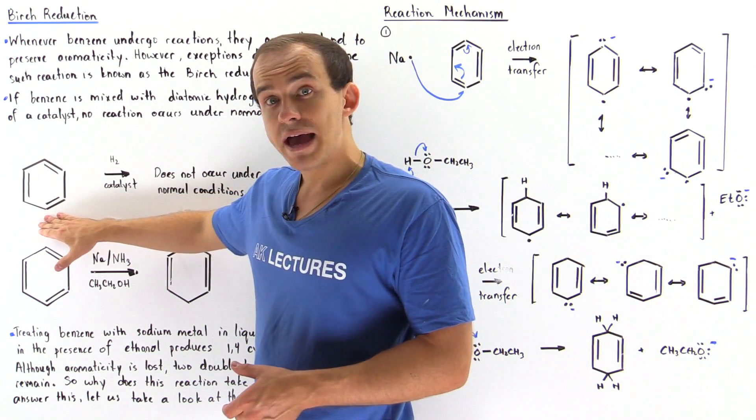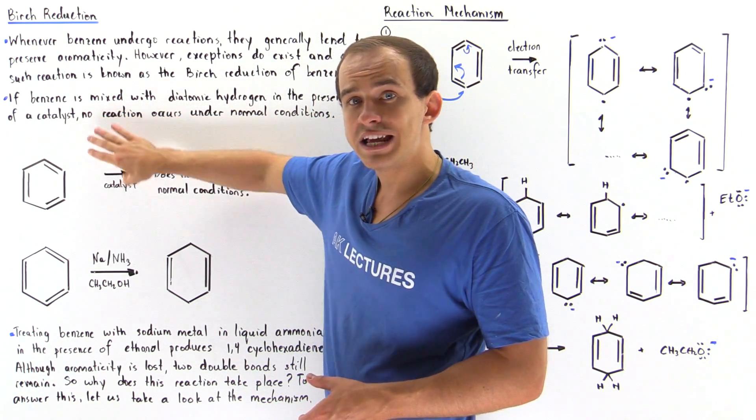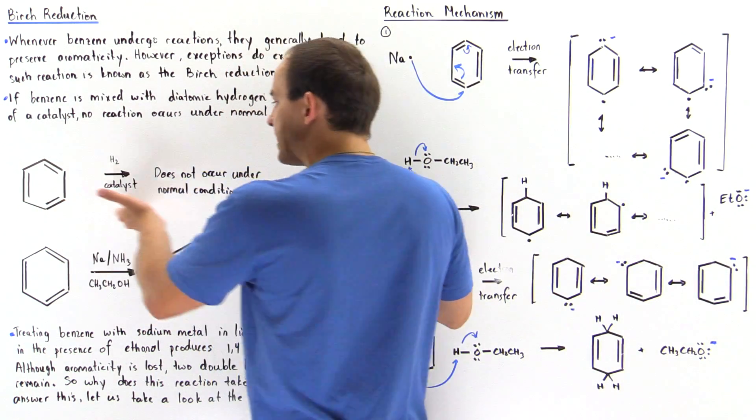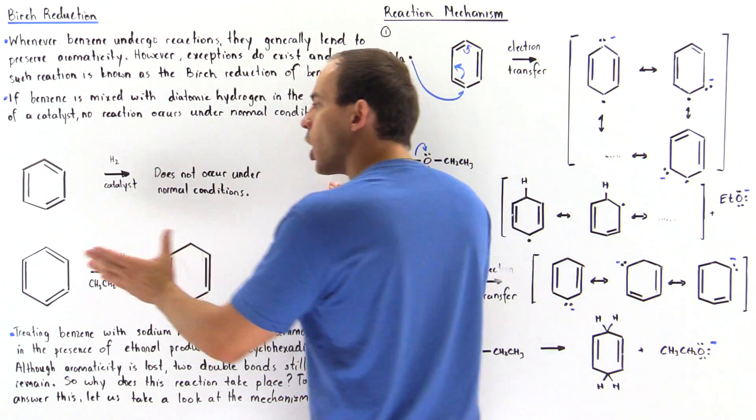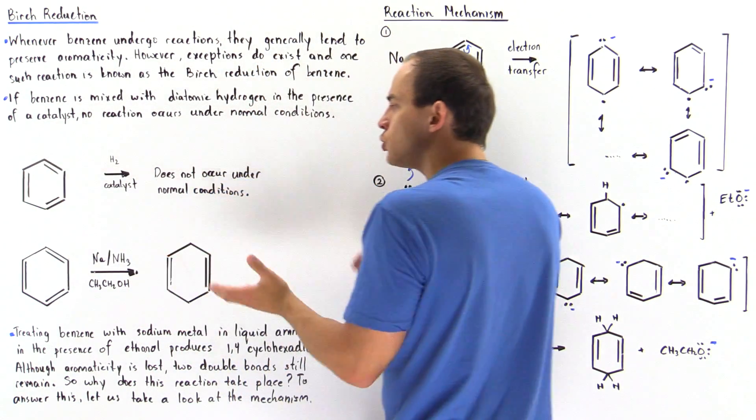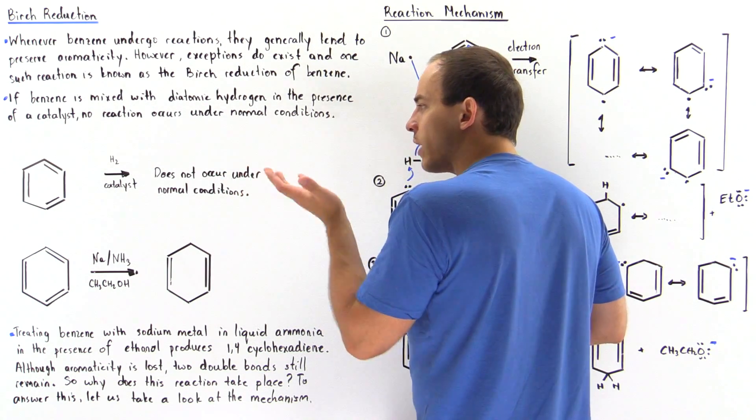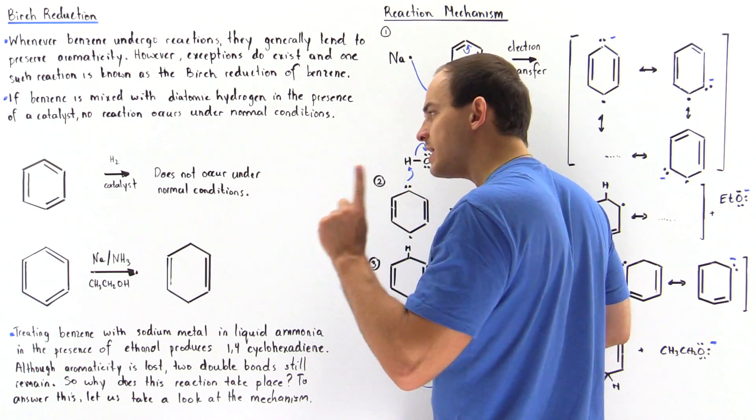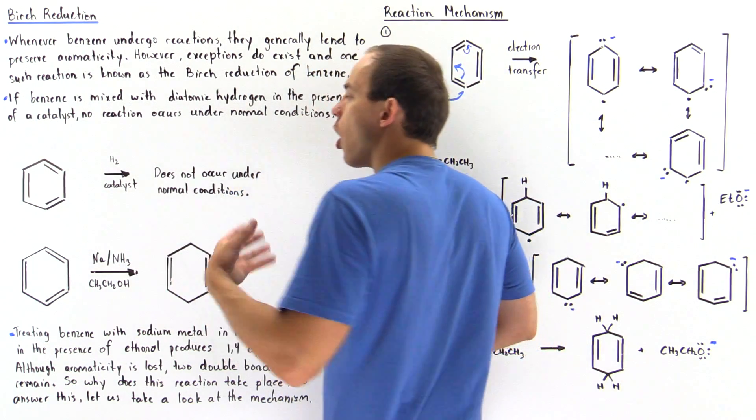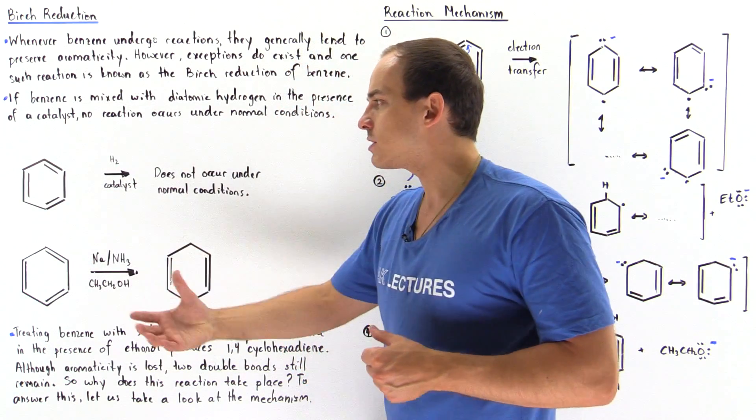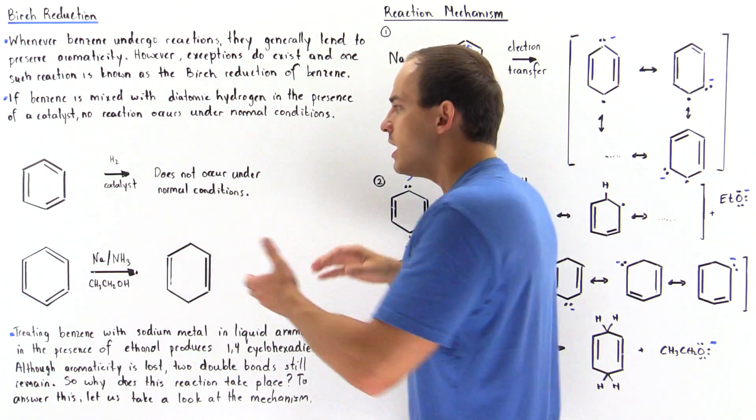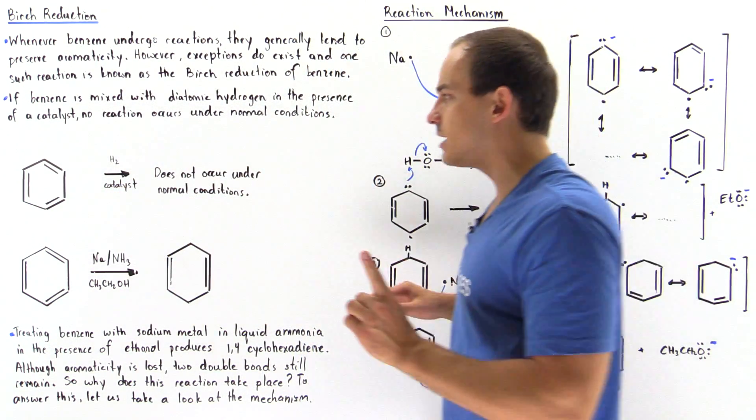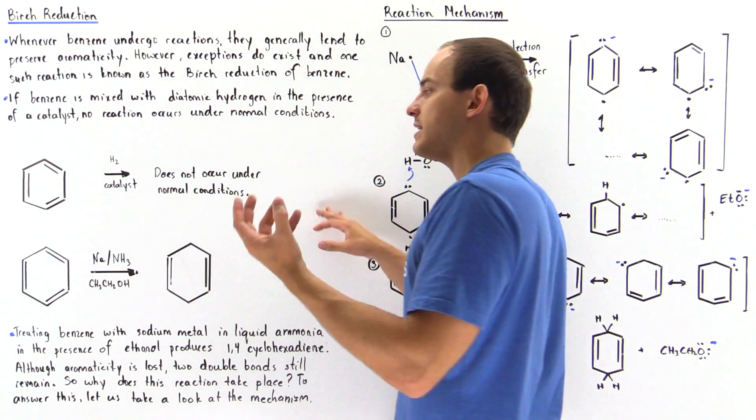Under normal temperatures and normal pressure, if we mix this benzene with diatomic hydrogen in the presence of a catalyst, no reaction will take place. The reason that no reaction takes place here is because we go from a stable aromatic compound to cyclohexane, and cyclohexane is not aromatic. All the bonds in cyclohexane are sp3 hybridized, while the bonds here are sp2 hybridized, and so they contain more s character and therefore are more stable. The reason this reaction, the hydrogenation of benzene, doesn't take place is because this is more stable because it is aromatic.